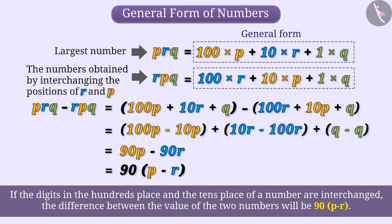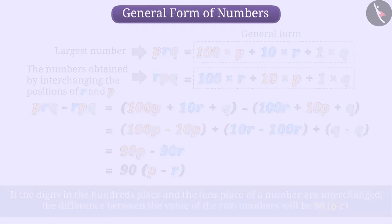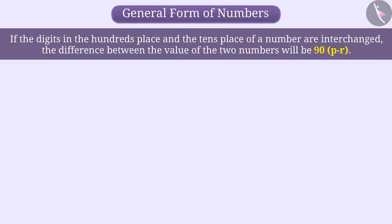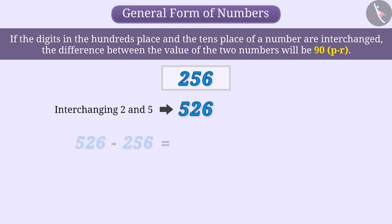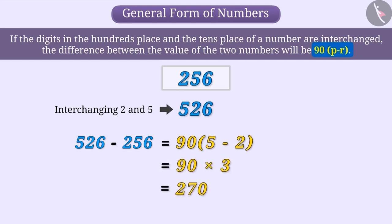We can use it as a formula. For example, if we want to find out what will be the difference between 256 and the number obtained by interchanging the digits 2 and 5 of 256, we can find it by 90(5 - 2) which will be 90 × 3 which is equal to 270.